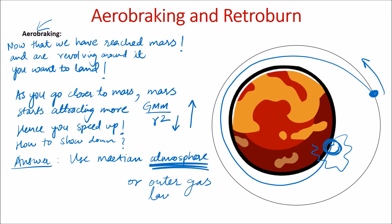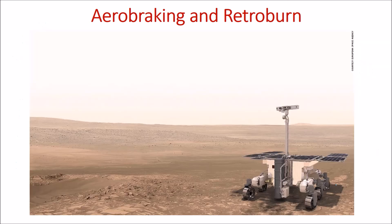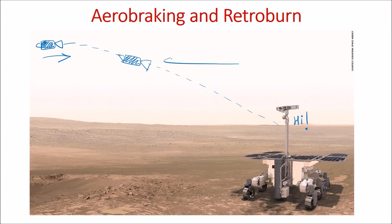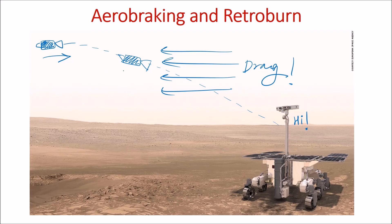The answer is to use the Martian atmosphere — that is the basic concept of aerobraking. You use the atmosphere, or the outer gas layer of any planet, to slow yourself down. The Curiosity rover is on the Mars surface, and you want to land your spacecraft there. You are coming closer and closer to Mars with very high velocity, and if you arrive with that same velocity you will probably crash. So you get help from the Martian atmosphere: you orient yourself so that the drag from the Martian atmosphere is maximum, and the drag slows you down.